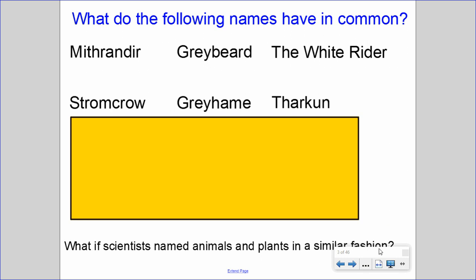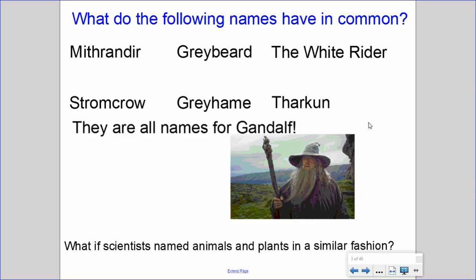So what do the following names all have in common: Mithrandir, Graybeard, the White Rider, Stormcrow, Gandalf, Tharkûn? If you want, Google the answer or think about it. What these names all have in common is that they are all names for Gandalf, a character from the Lord of the Rings series. Based on the region he's in, he goes by different names, and if you're not aware that these different names exist, it can be confusing about who is being referred to.